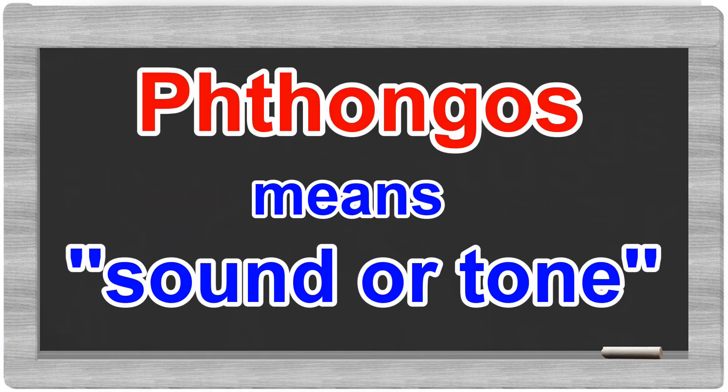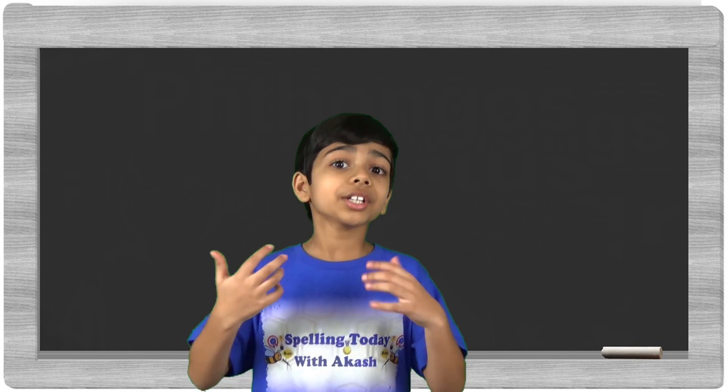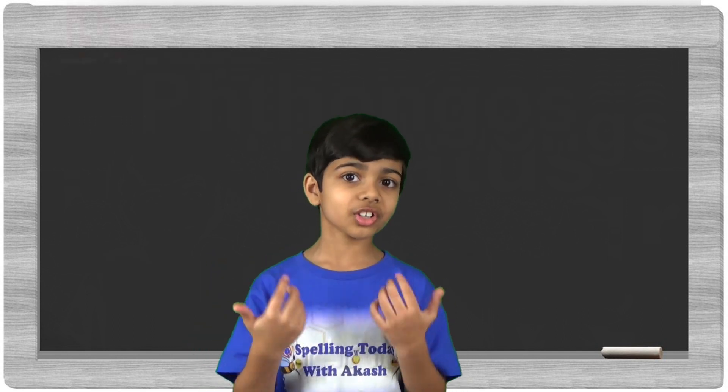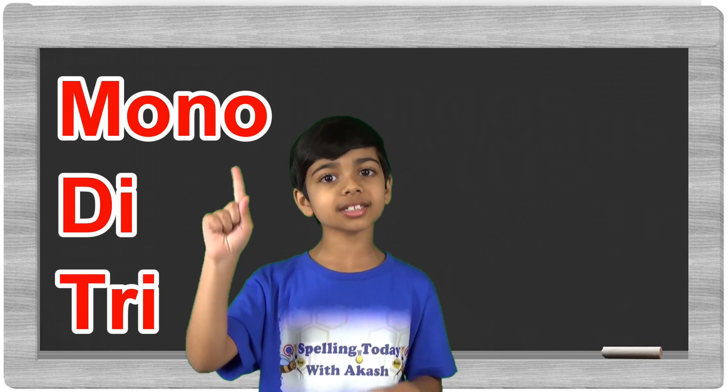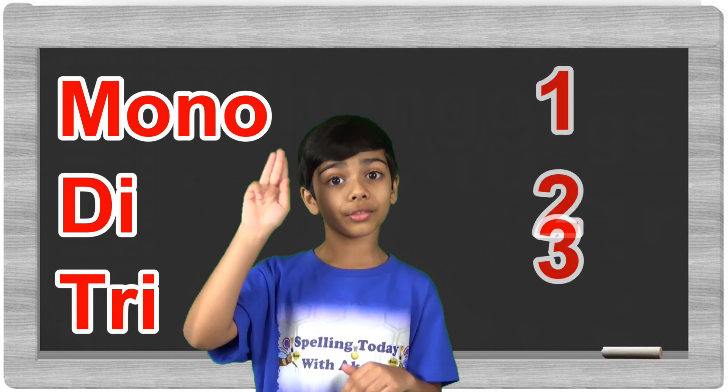Thongos means sound or tone in Greek, and mono, di, or tri stands for one, two, or three.